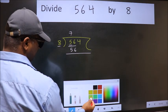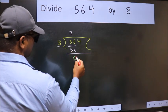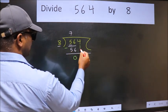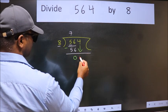Now we should subtract. We get 0. After this, bring down the beside number. So, 4 down.